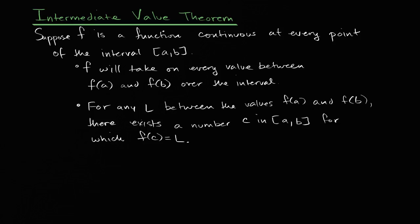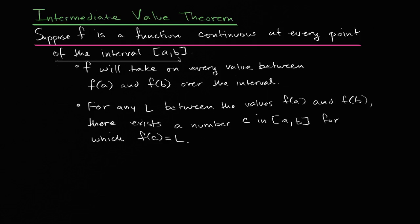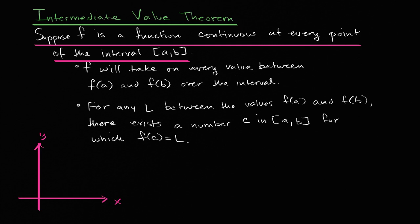Let me draw a couple of examples of what f could look like based on this. So let me draw some axes — that's my y-axis and this is my x-axis. So if this is a and this is b, f is continuous at every point of the closed interval [a, b], meaning it has to be defined at every point. To be continuous, you have to be defined at every point, and the limit of the function as you approach a point should equal the value of the function at that point.